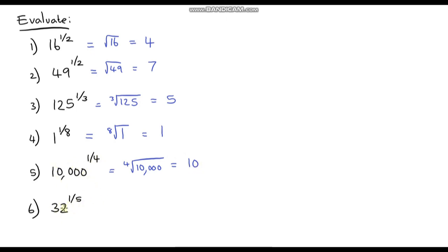Last but not least: 32 to the one fifth power is the fifth root of 32, which is 2. Hopefully you enjoyed that video on fractional indices — I look forward to seeing you in the next video. Take care.